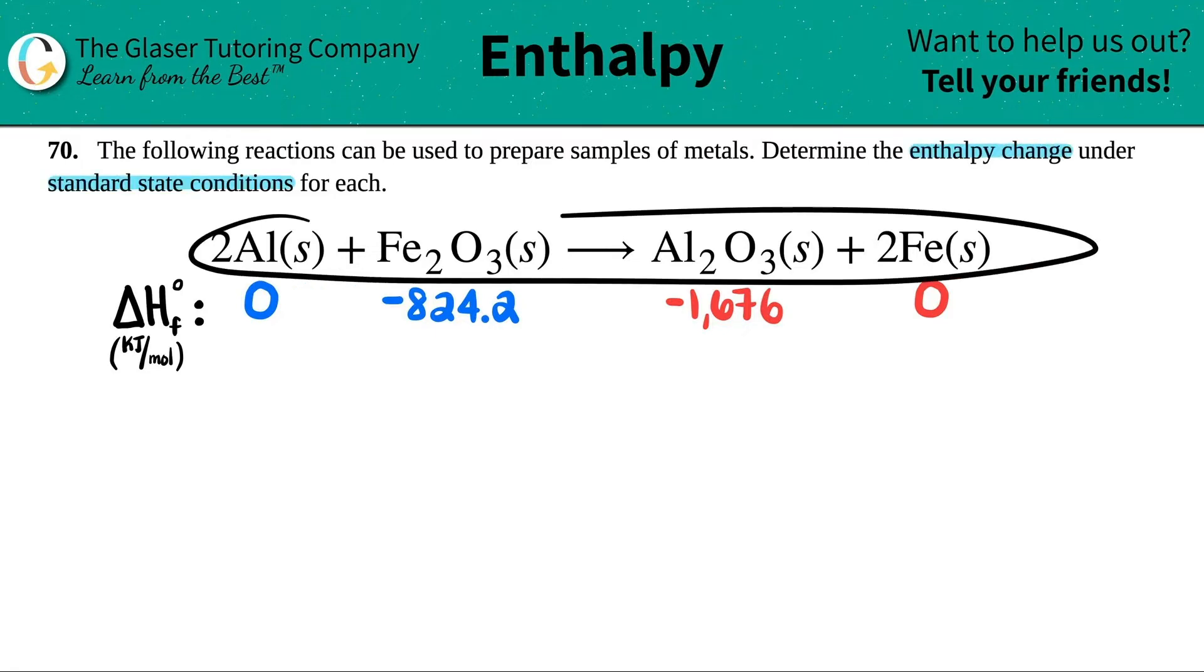And then we have one reaction right here. So we have 2Al solid plus Fe2O3 solid yields Al2O3 solid plus 2Fe solid.